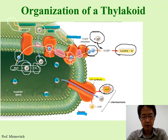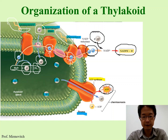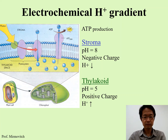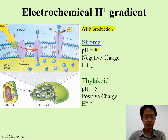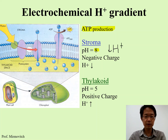As hydrogen ions go through ATP synthase, their kinetic energy is converted to chemical energy — ATP. So you may say that photosystem 1 indirectly makes ATP as well. In the stroma, pH is 8; it is basic because there is low hydrogen ion concentration. In the thylakoid it is acidic because it has high hydrogen ion concentration.